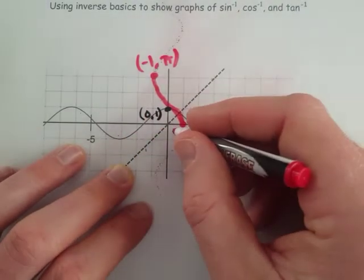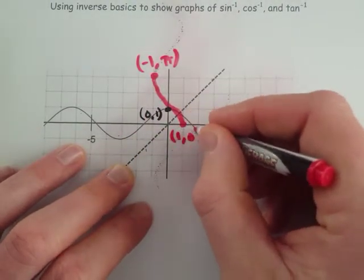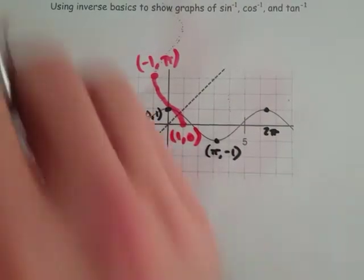0, 1 flips over to this point, which is 1, 0. And that gives us our endpoints for the cosine inverse.